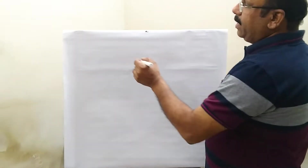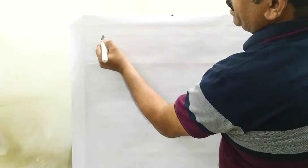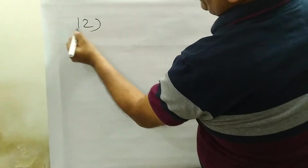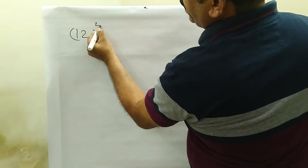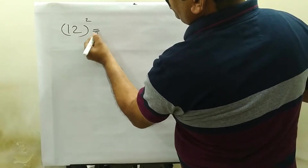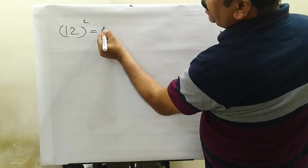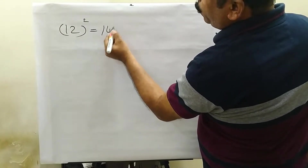Let's see an example. If we find 12 squared, we know the 12 times table, that's why we say 144.